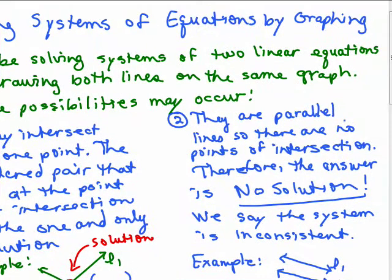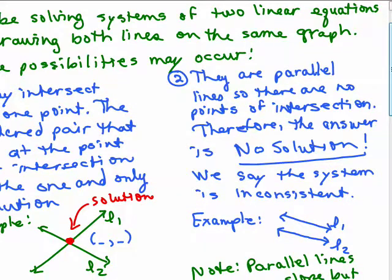The second possibility is that they're parallel. And when two lines are parallel, they don't intersect at all. So there is no solution. There's going to be absolutely no solution. Those lines will never meet, so they'll never intersect. And we say the system is inconsistent. In other words, you're giving us two lines and there is no solution.